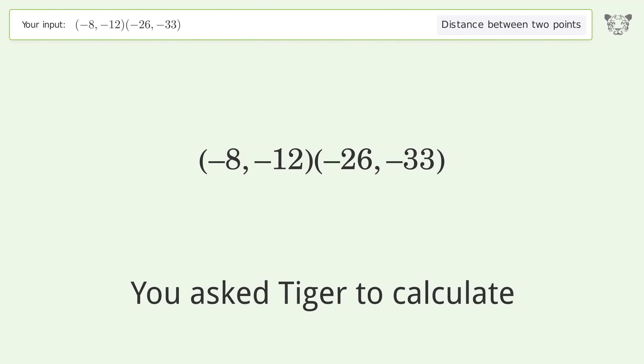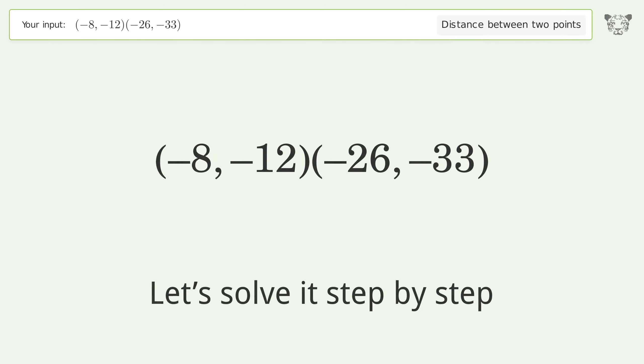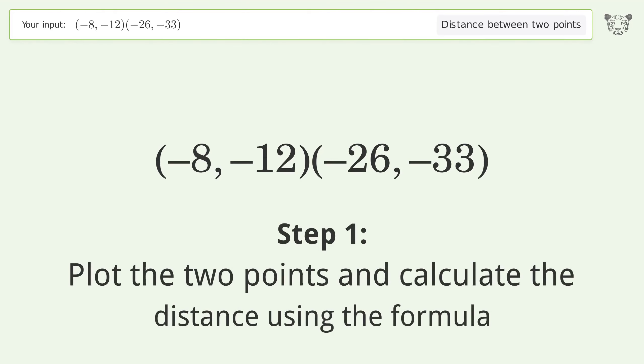You asked Tiger to calculate the distance between two points. The distance between the two points is the square root of 765 or 27.659. Let's solve it step by step: plot the two points and calculate the distance using the formula.